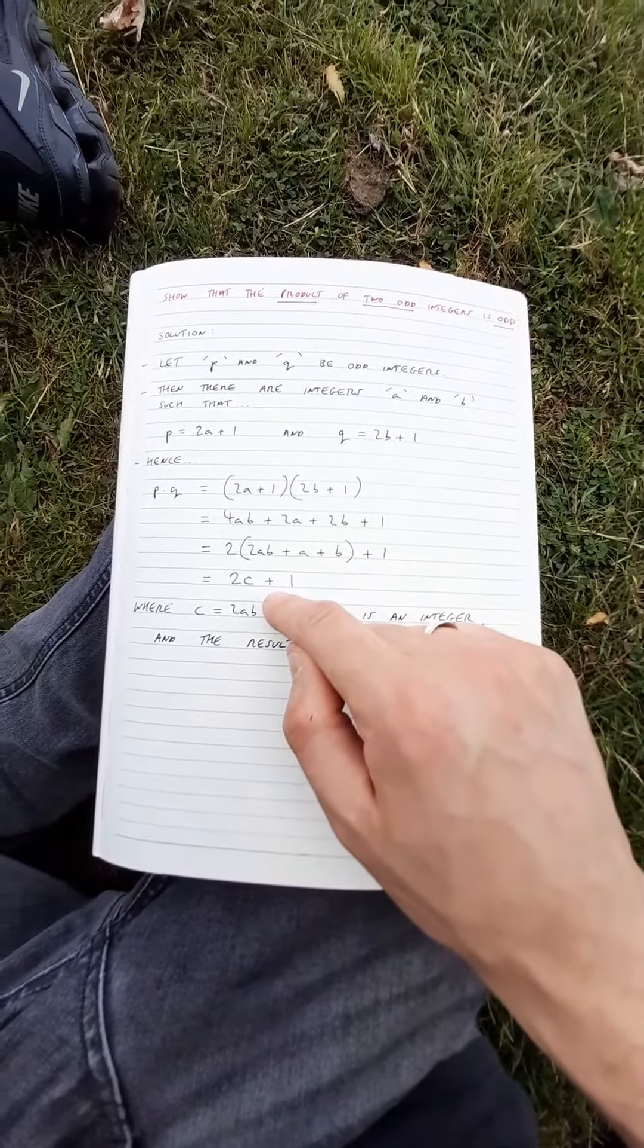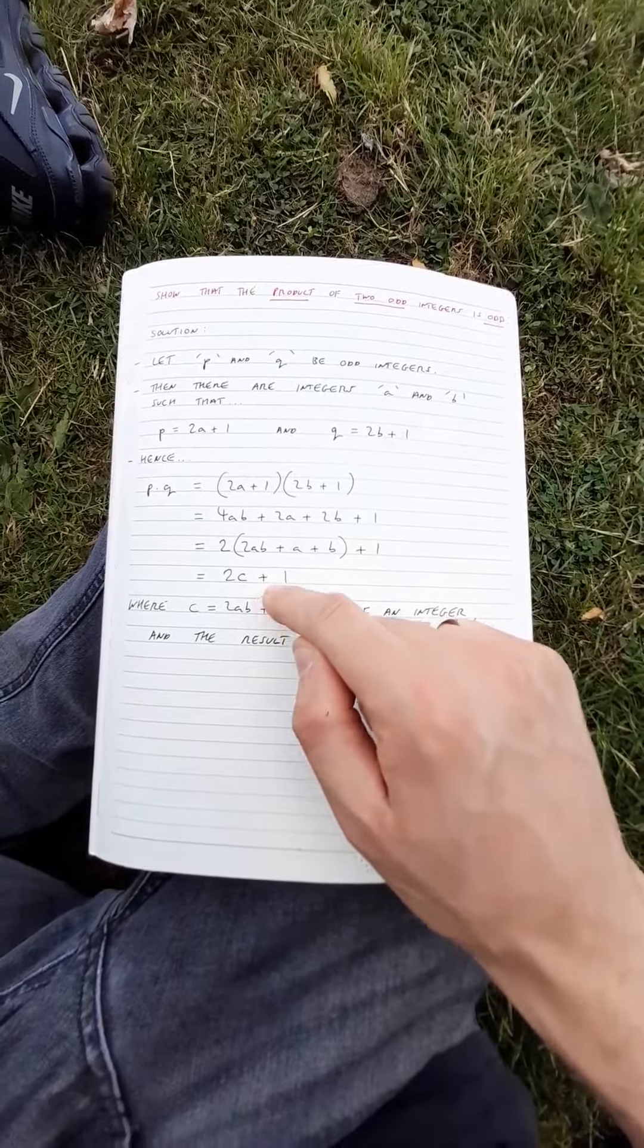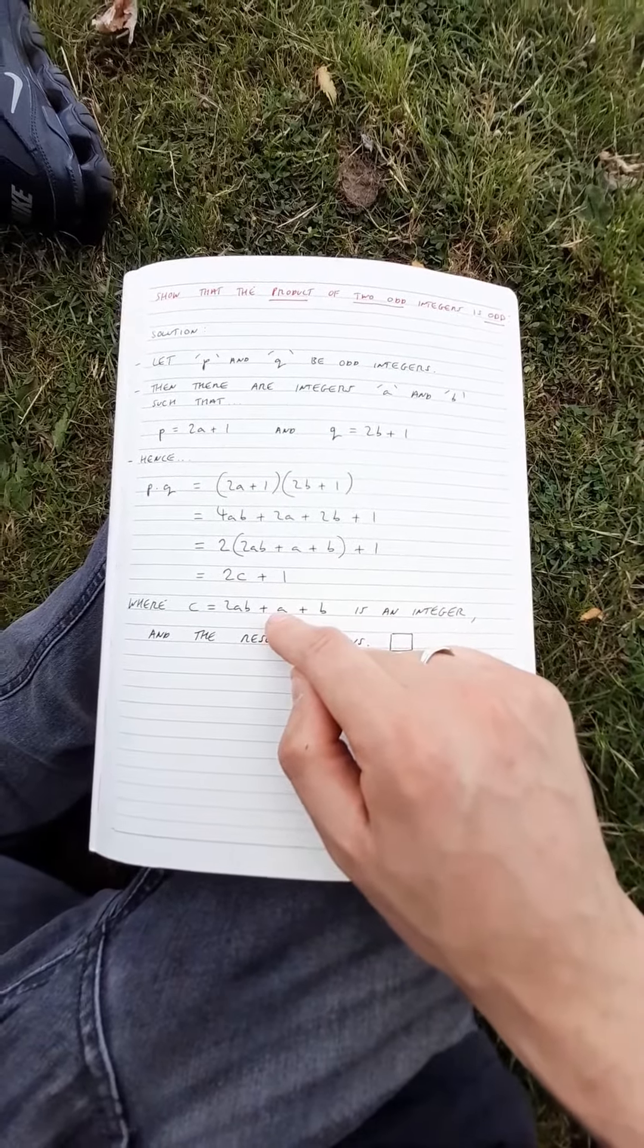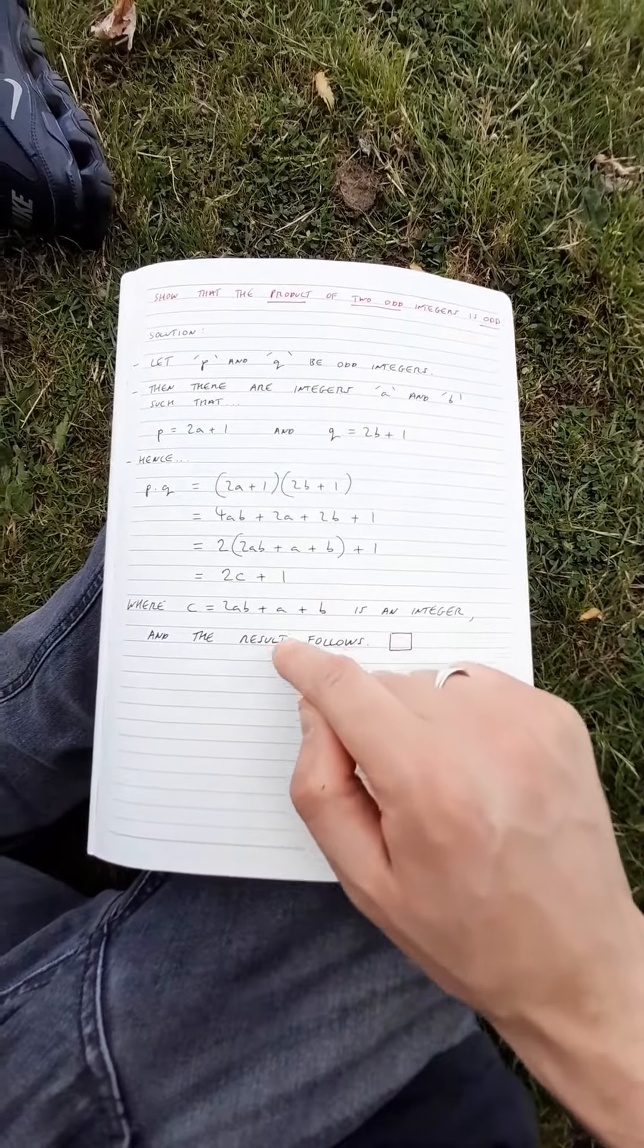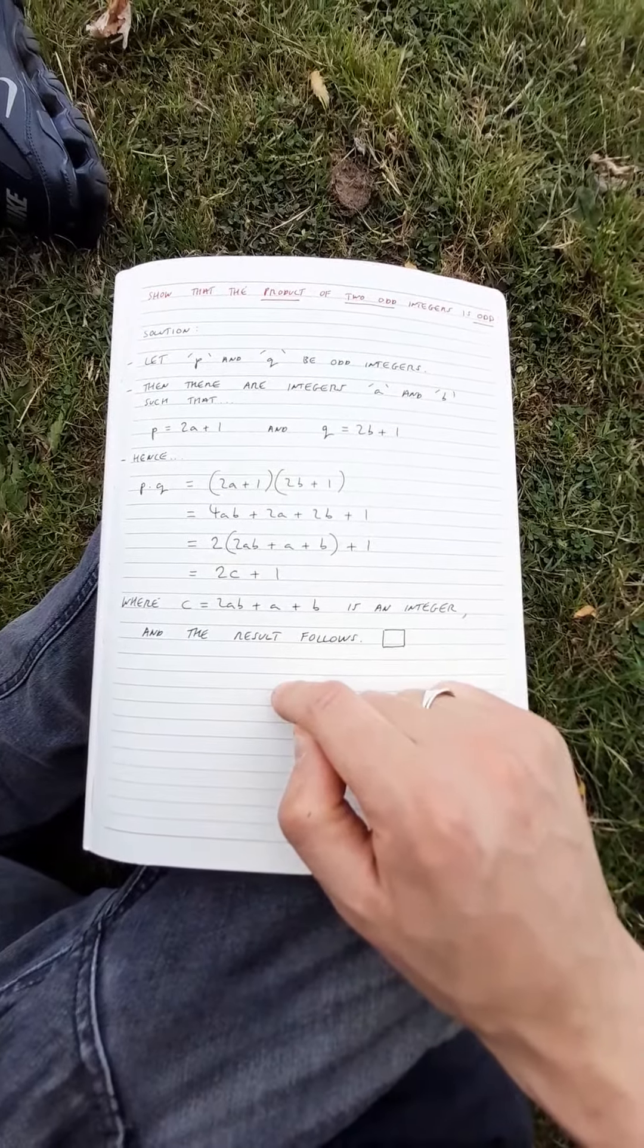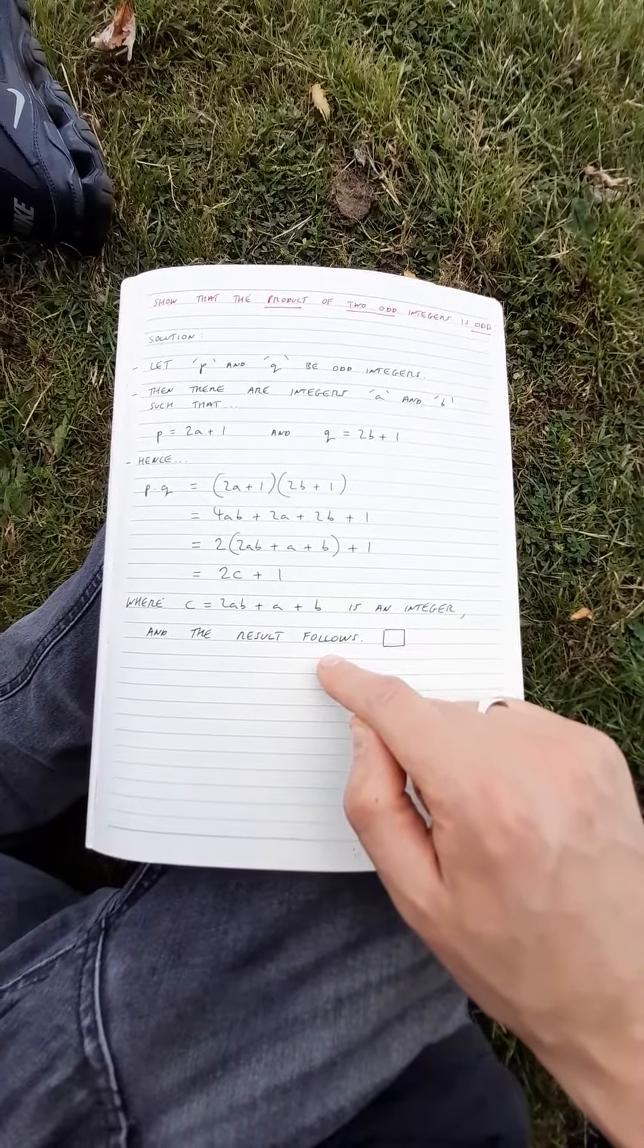And we have an expression in the form of an odd number. That is because c is an integer and we get this result which follows. We put the square here to demonstrate that we've completed our proof.